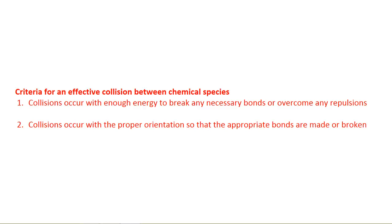Let's summarize. We know that an effective collision, one that will turn into a chemical reaction, must occur with enough energy to break any necessary bonds and overcome any repulsions. In addition to that, these collisions must occur with an orientation that allows the appropriate bonds to be made and to be broken. We need to keep this in mind because knowing these two criteria will allow us to know what parameters of the reaction we control so that we can maximize the number of reactions that happen or even minimize the number of reactions that happen.